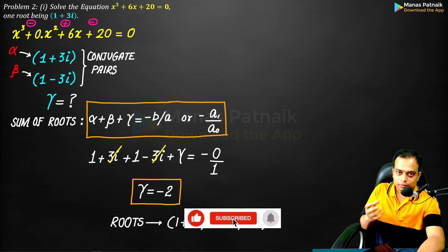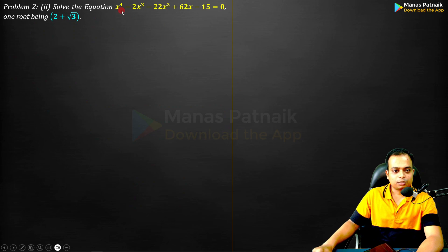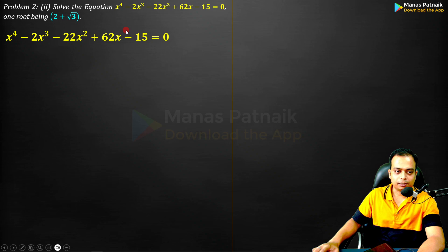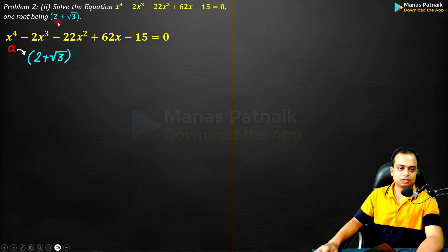Let's move to the next problem. That is a bit complex. Take a look. x⁴ - 2x³ - 22x² + 62x - 15 = 0. Let me write this down first of all. Now what? One root is irrational: 2 + √3.